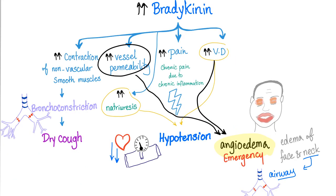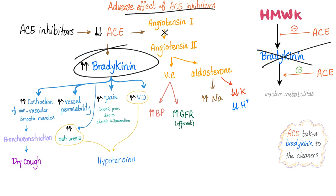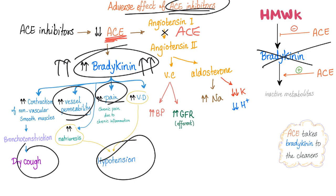When you use ACE inhibitors, bradykinin is left free — it's uninhibited and undegraded. Side effects of ACE inhibitors: when bradykinin is dominant and live, it leads to dry cough, angioedema, pain, and hypotension. The same ACE enzyme used to convert angiotensin-1 to angiotensin-2 is now blocked, so there is no vasoconstriction, no hypertension — in fact, there is hypotension. That's why ACE inhibitors are anti-hypertensive medications. There is also decreased GFR, which is why they can cause kidney problems, at least initially.